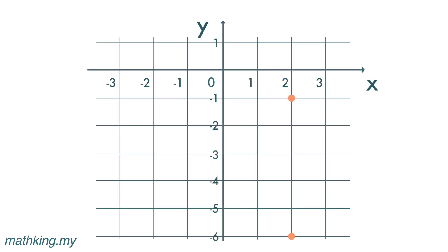One last example. To find the distance, we can simply count the units between the two points: one, two, three, four, five — five units.